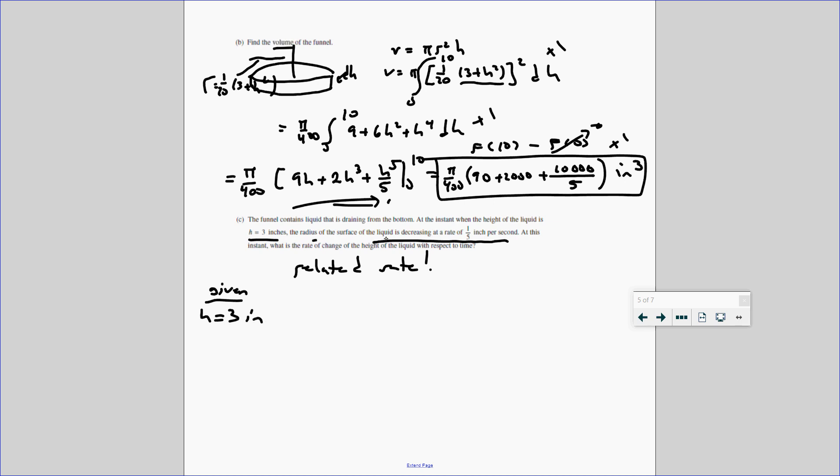We're given the height is 3 inches. The radius is decreasing. So dr/dt. Be careful. It's negative 1/5 inch per second. Remember, it's negative because it's decreasing right there. We're told that it's decreasing. So it's got to be negative. And what are we trying to find? The change in height. So dh/dt. So we know, well, what is the radius equal to? 1 over 20. And that is 3 plus h squared.